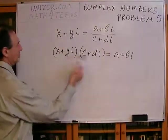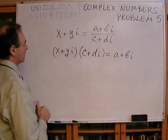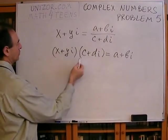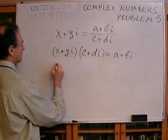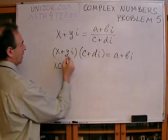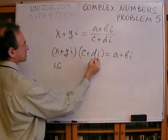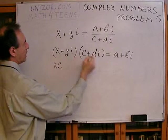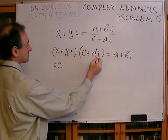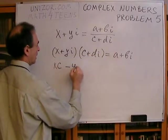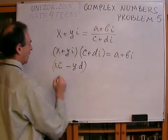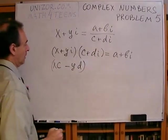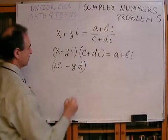Well, let's just open these parentheses and see what happens. First of all, the real part would be X times C. And Y I times D I would be Y times D times I squared, and I squared is minus 1, so it's minus Y D. And that would be my real part of the result of this multiplication.